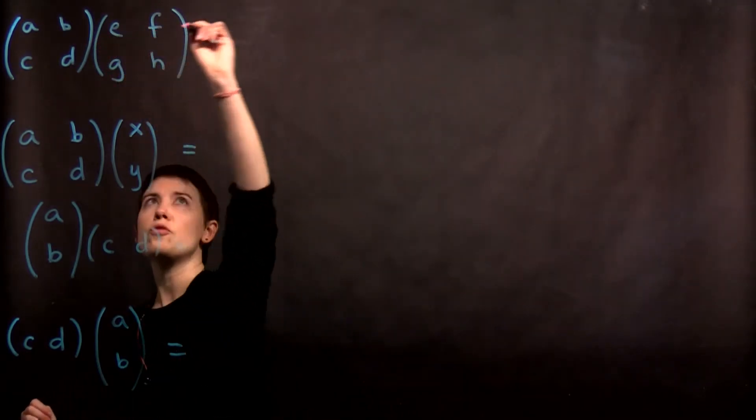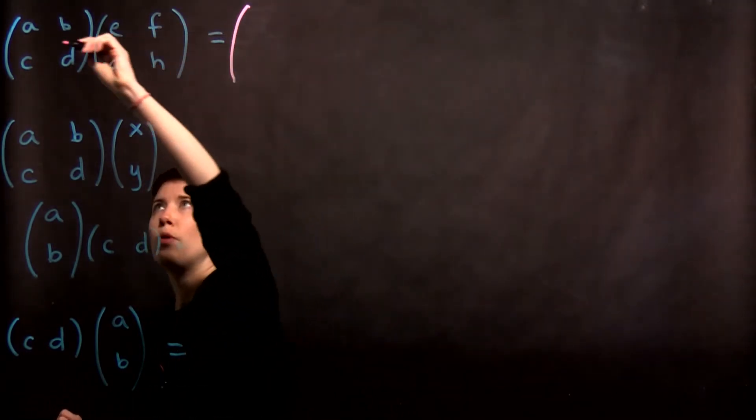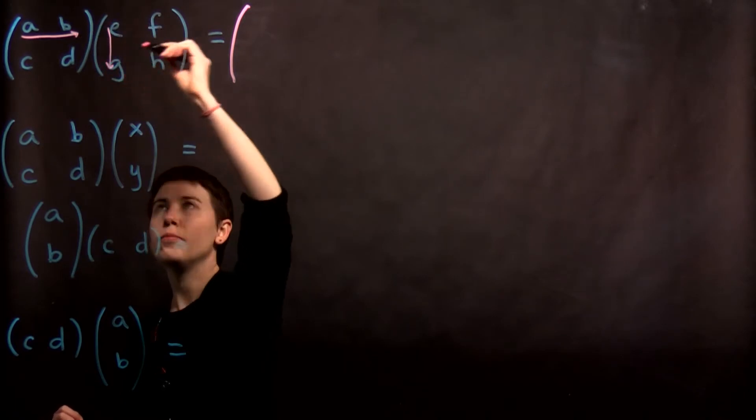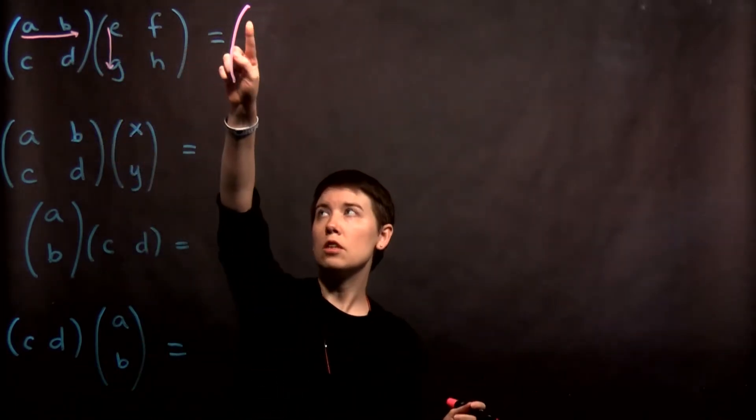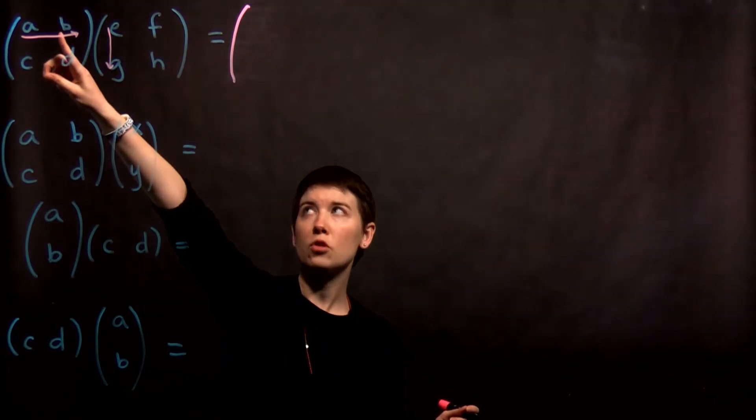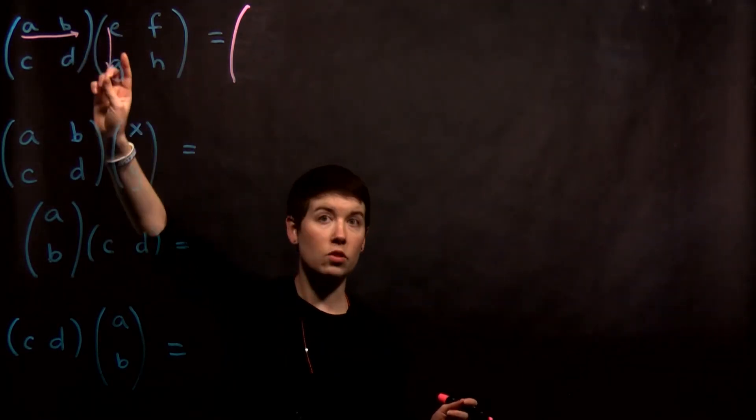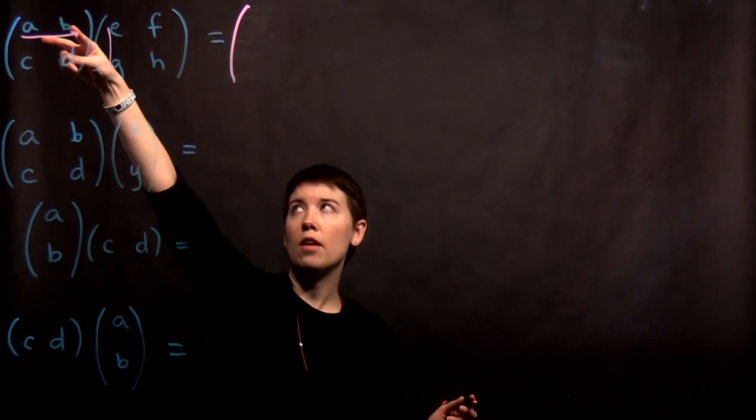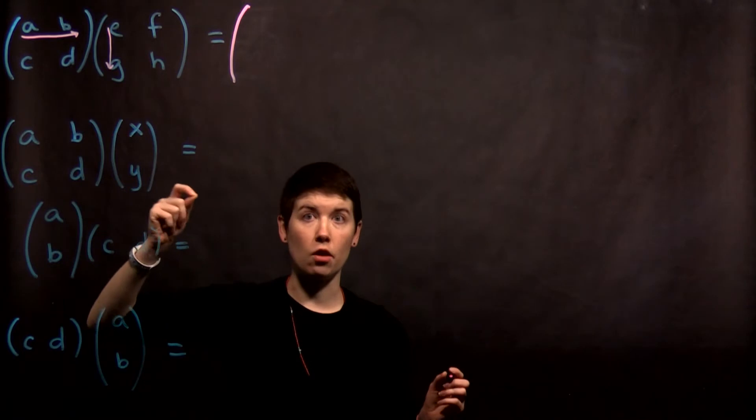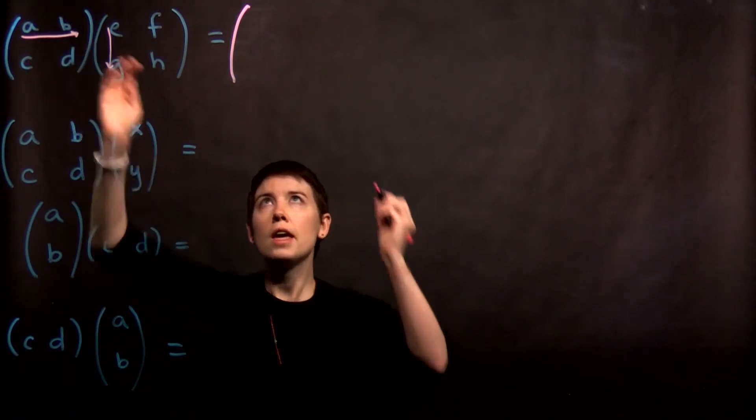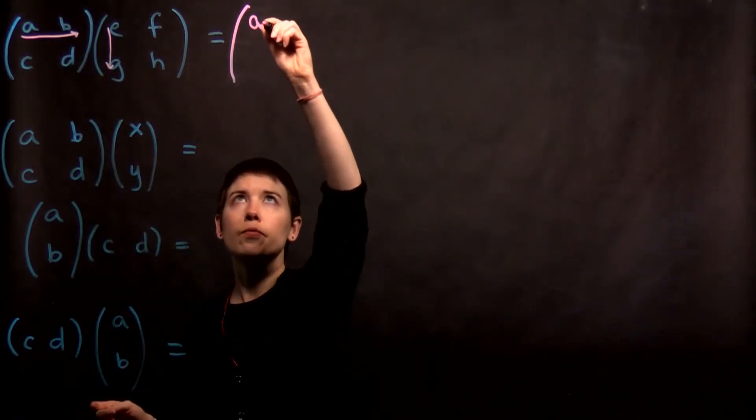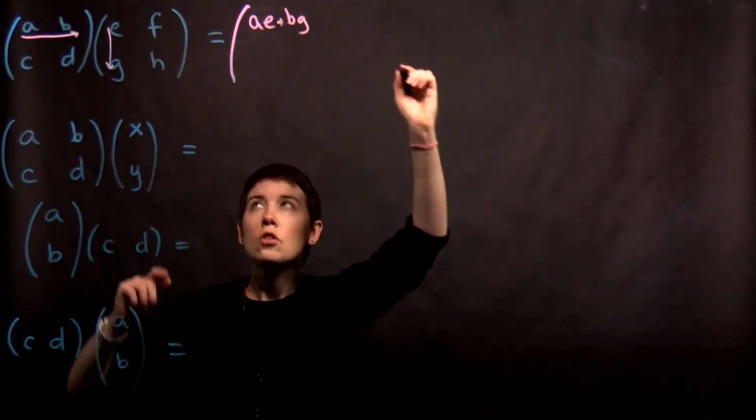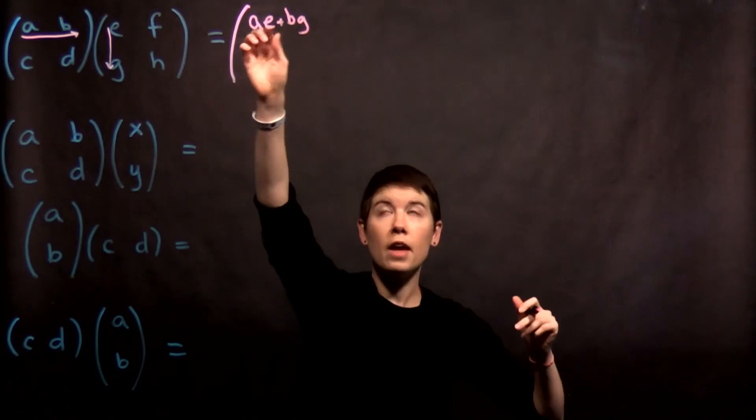So the idea is to first start with thinking about row and then column. So this first entry here is going to be the first row of the first matrix and the first column of the second matrix. And what we're going to do is actually multiply this row by that column and add them together. So an example is a times e plus b times g. So then this is all one entry.